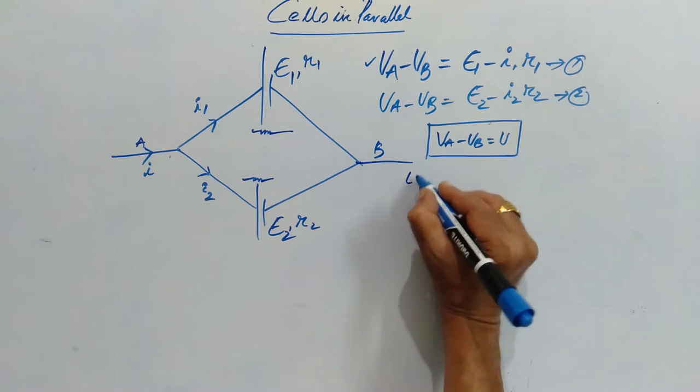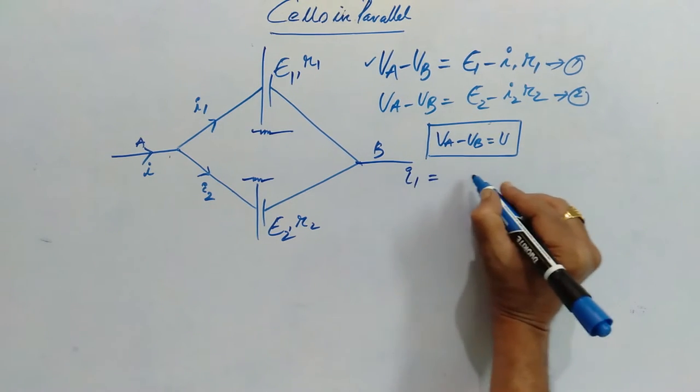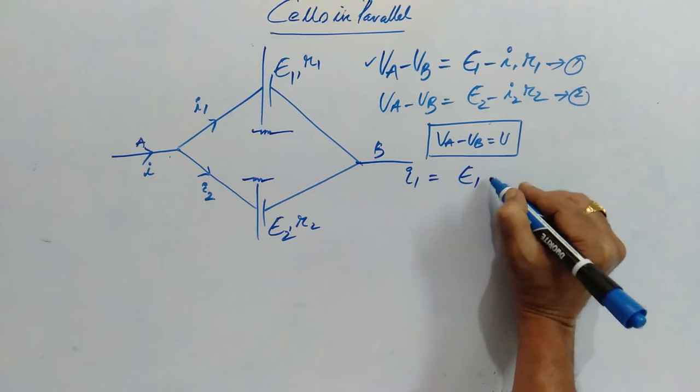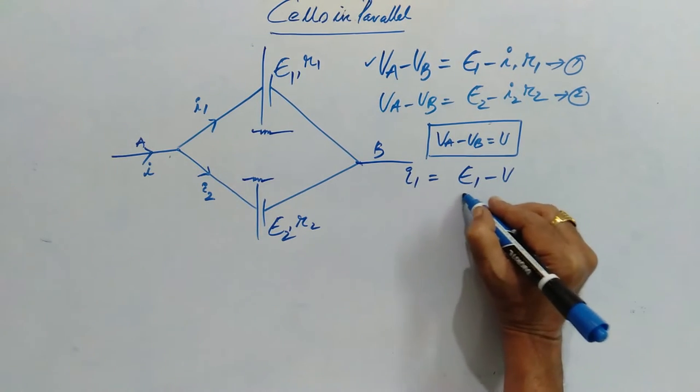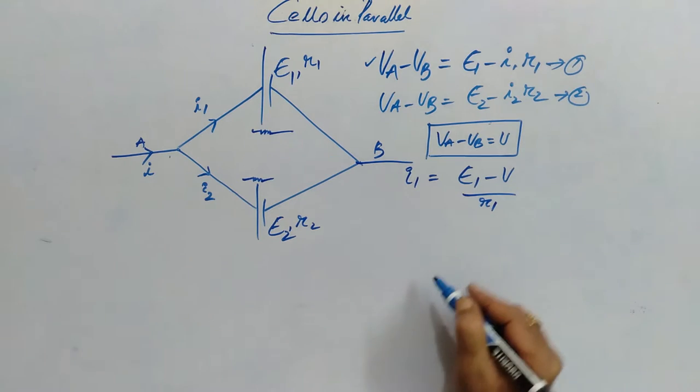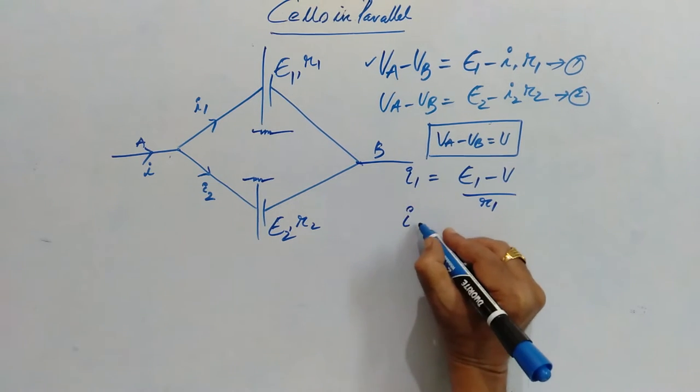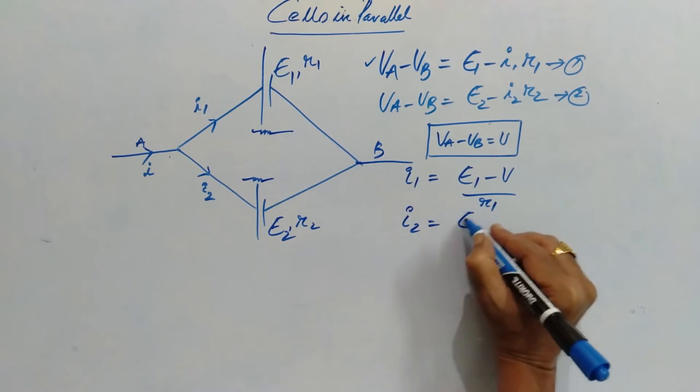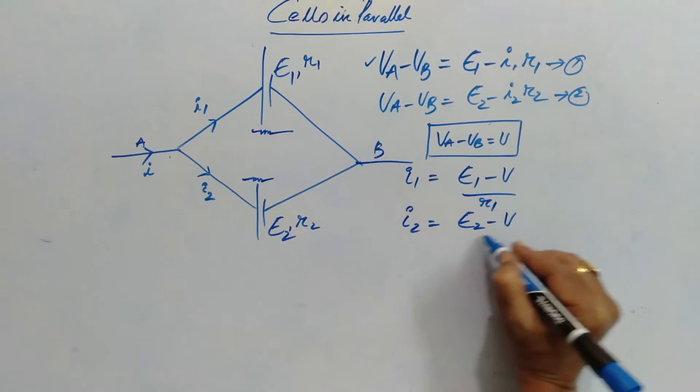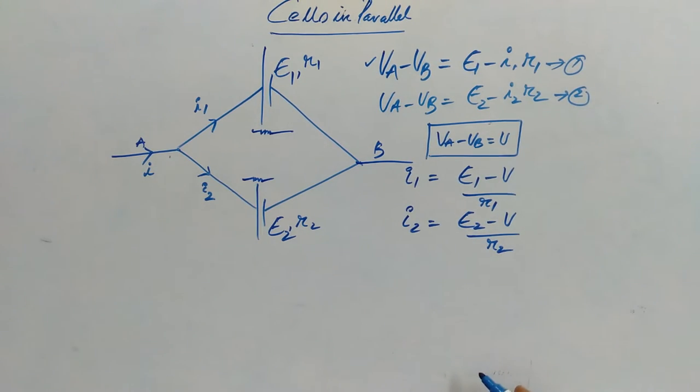Then, I1 is equal to E1 minus V by R1. Similarly, I2 is equal to E2 minus V by R2.